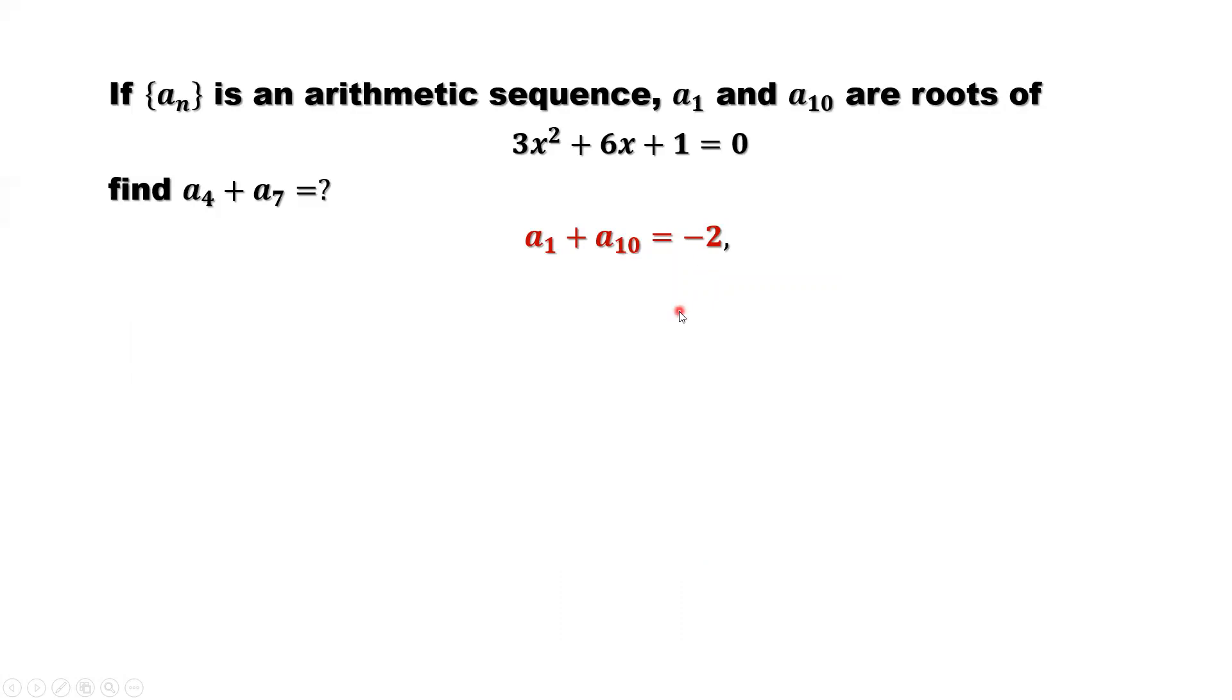Now we need to find A4 plus A7. What is the relationship between the two sums we cannot see right now? The first condition. An is an arithmetic sequence. What does this mean?